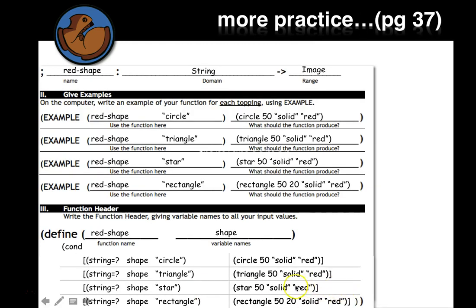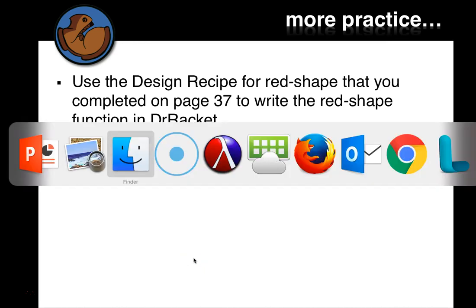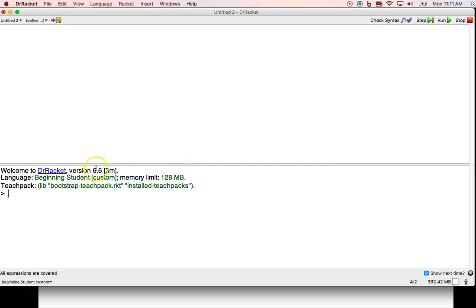One thing they didn't include is an else, so we'll have to see what happens if we put something other than the expected shapes in. Use the design recipe for red-shape that you completed on page 37, and we'll write the red-shape function here in DrRacket.